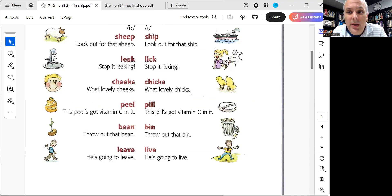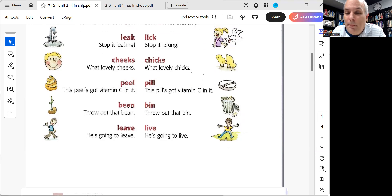This peels, make sure there's going to be a Z sound on the S. This peels got vitamin C in it. Peels, Z sound. This pill's got vitamin C in it. Peels, pills. Throw out that bean. Throw out that bin. He's going to leave. He's going to live.